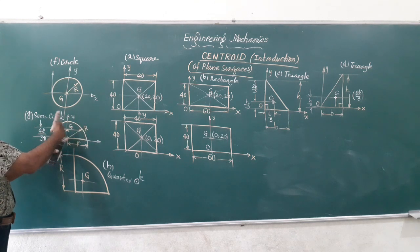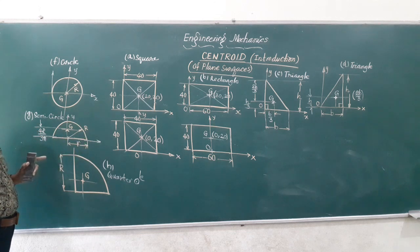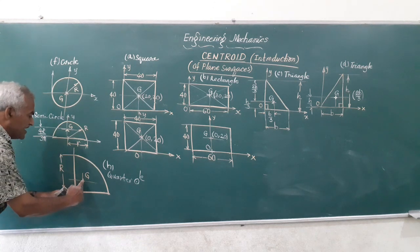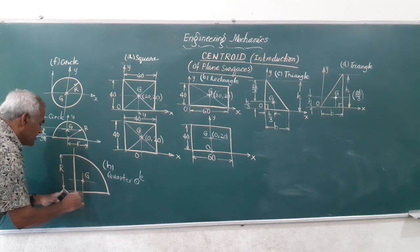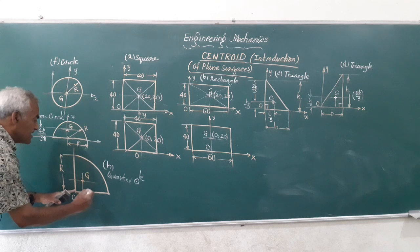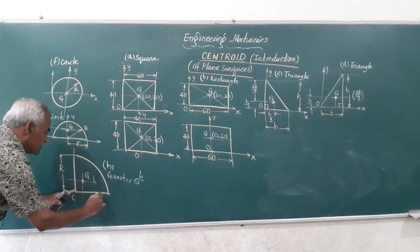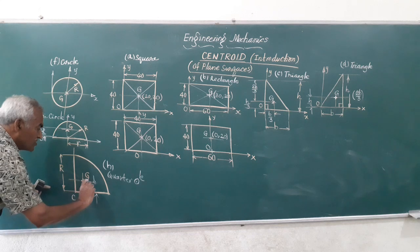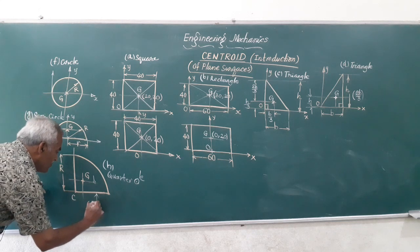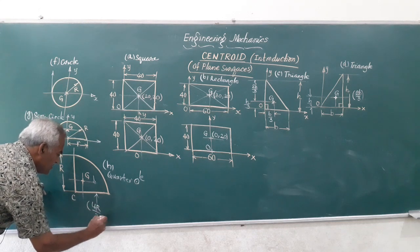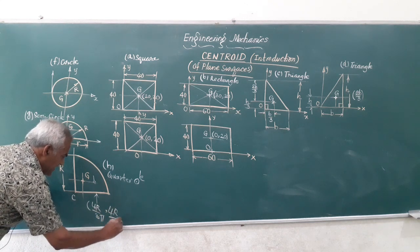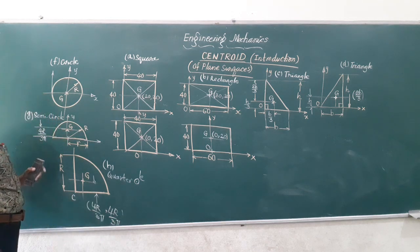Once you know the radius of the semicircle you can calculate the centroid location. For a quarter circle, the centroid G lies at equal distances from both straight edges. Both the X and Y coordinates are 4R by 3π from the corner, so G is at (4R/3π, 4R/3π) where R is the radius of the quarter circle.